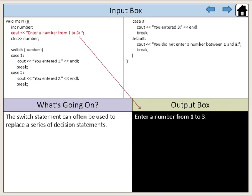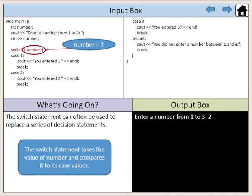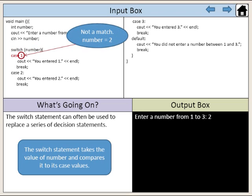Let's see an example. The user enters the value 2, which is then assigned to the variable number. The switch statement takes the value of number and compares it to its case values. The first case evaluates if the value of number is equal to 1. Since the value of number is 2, this is not a match and the compiler moves on to the next case.